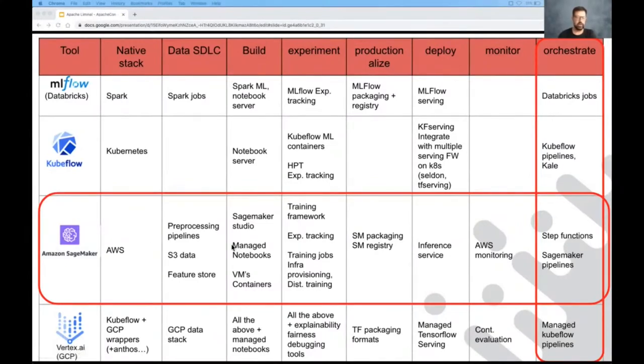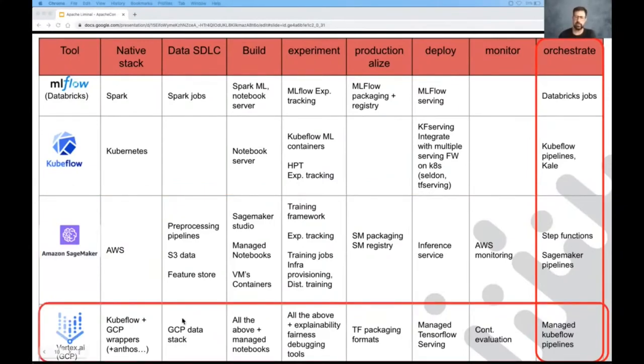Next is Kubeflow, a popular project out of Google. Kubeflow is centered around Kubernetes - it assumes every single step is a Kubernetes task. Kubeflow is more open, so step implementations can be provided by the community. It offers a notebook service, ready-made machine learning containers for training, hyperparameter tuning, and experiment tracking integrated into the tool. There's an inference piece with multiple frameworks that can be plugged in with a common interface. For the pipeline, they offer Kubeflow Pipelines which orchestrates this workflow, plus a tool called Kale which takes a notebook and turns it into a Kubeflow Pipeline.